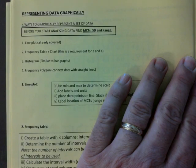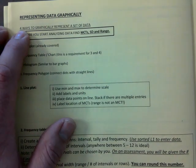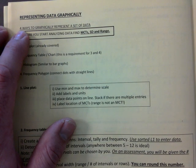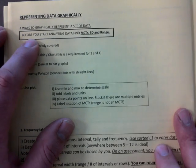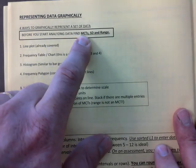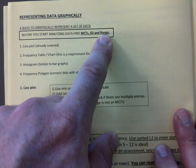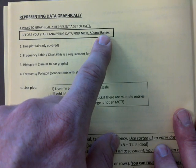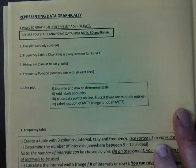Line plot. So here we go, page eight. There are four ways to graphically represent data. Before you start analyzing, find the MCTs, standard deviation and range. So we're always going to do that. That's an important metric.